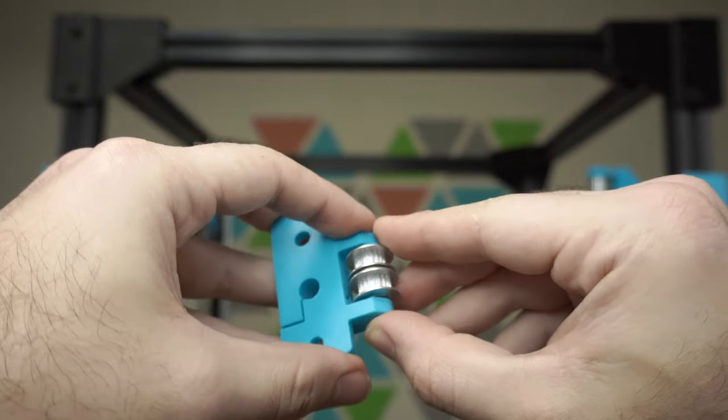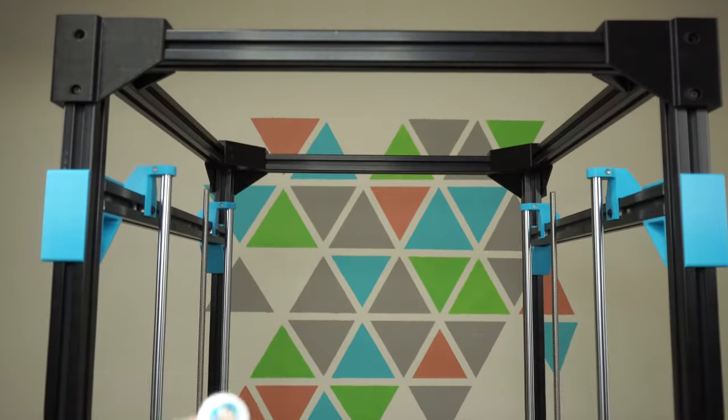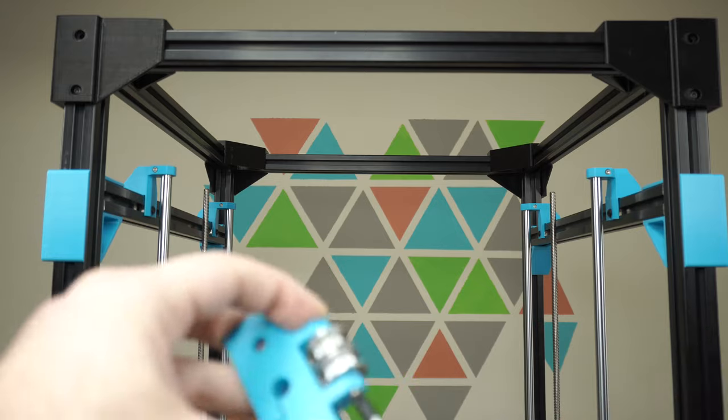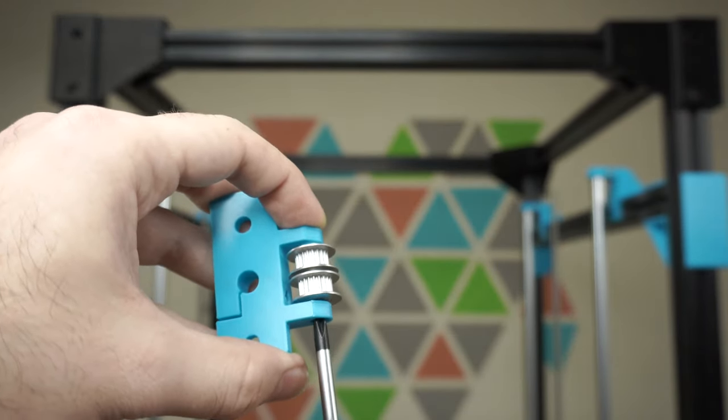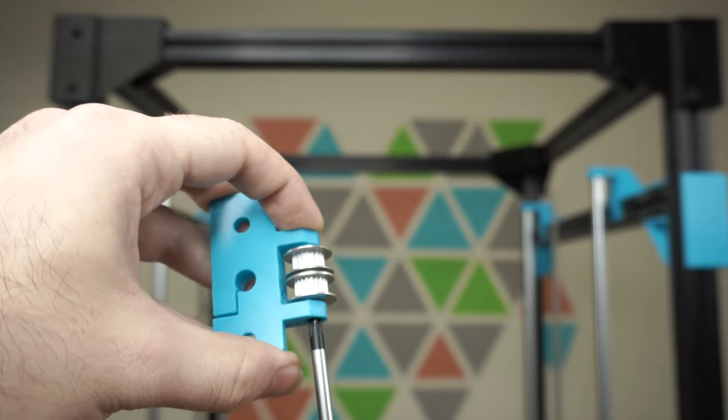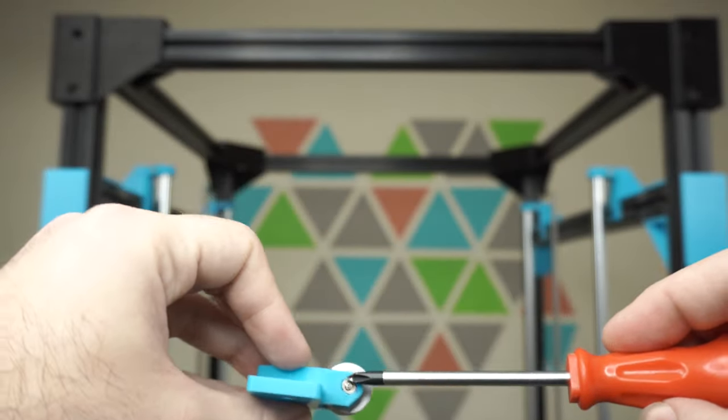Okay, and now that this whole thing is assembled, we can tighten it up. This doesn't need to be super tight, just snug so that it doesn't come loose when there's a captured nut.